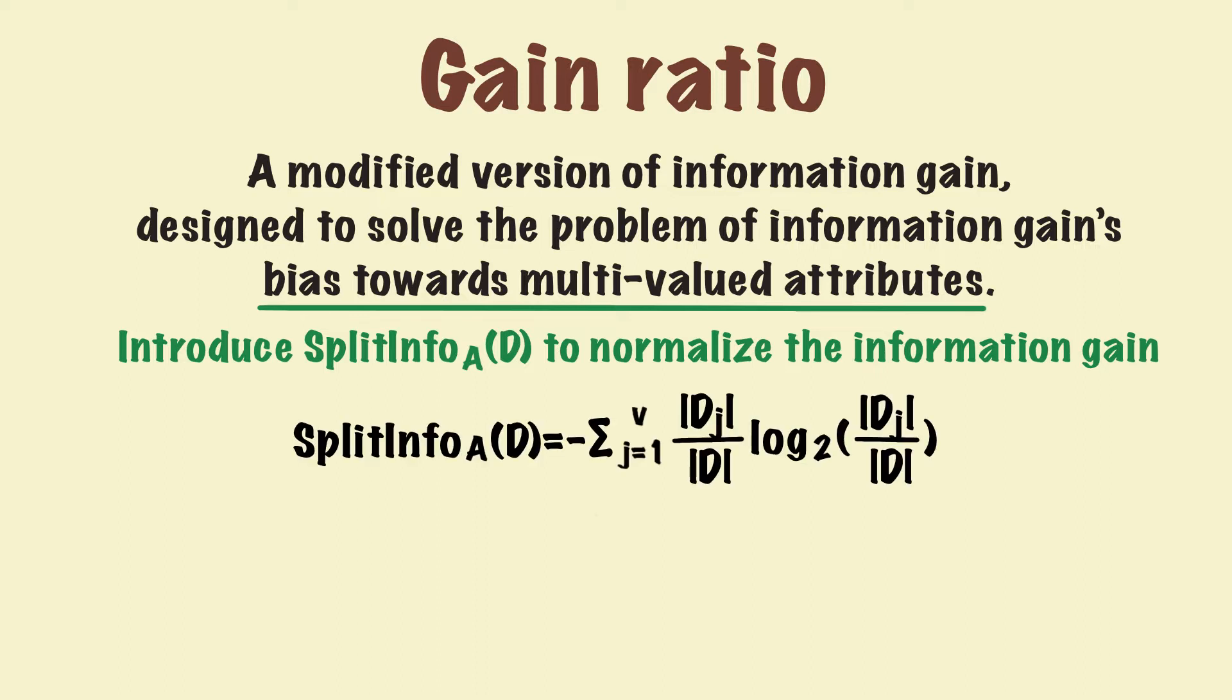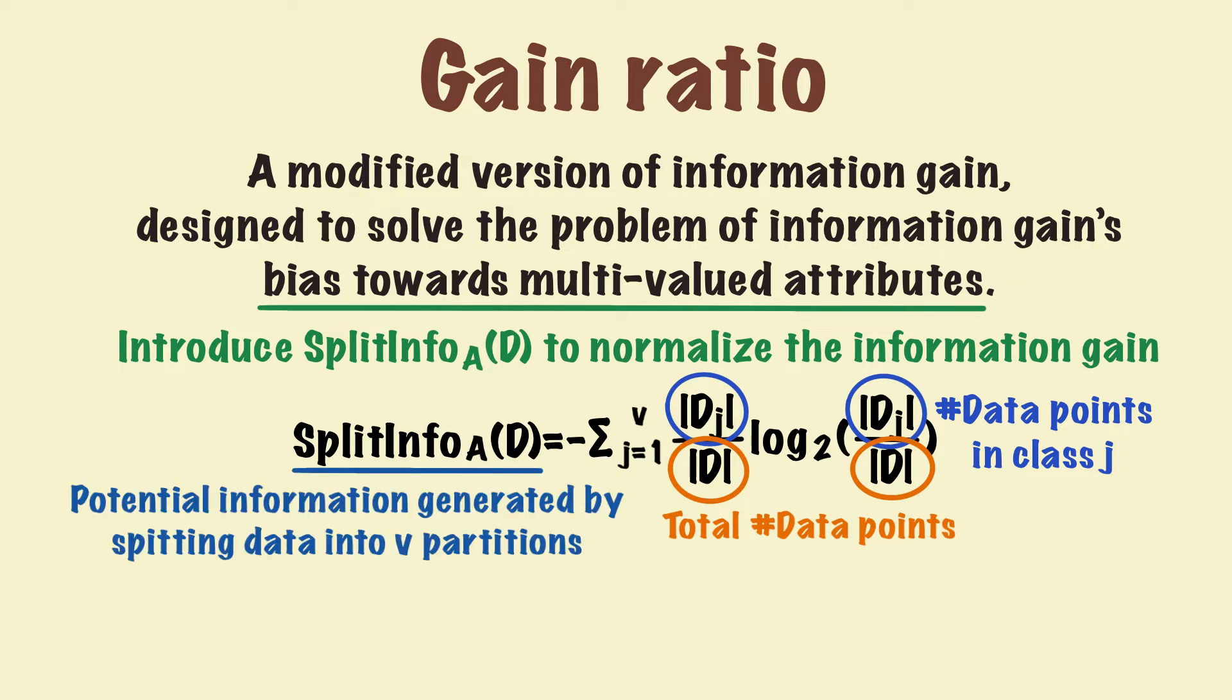The formula for split information goes like this. D_j is the number of data points in a certain class j. D is the total number of data points in the attribute A. Most importantly, the meaning of split information is the potential information generated by splitting data into v partitions. That's why we can use this split information as a unit and balance the bias towards multivalued attributes.